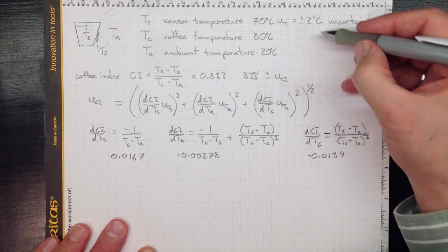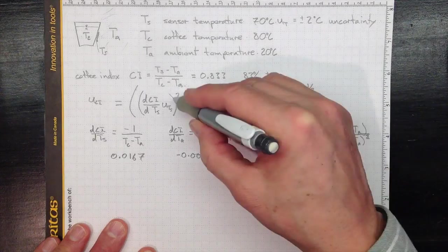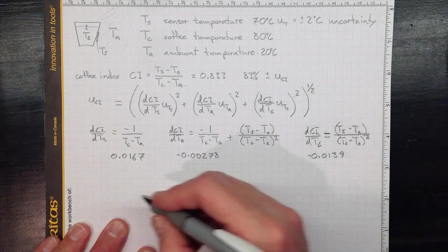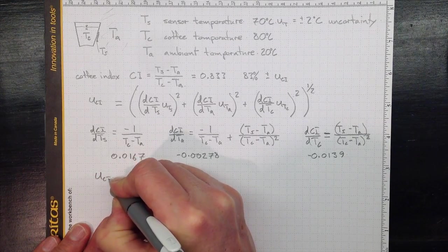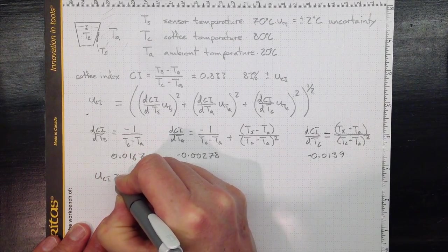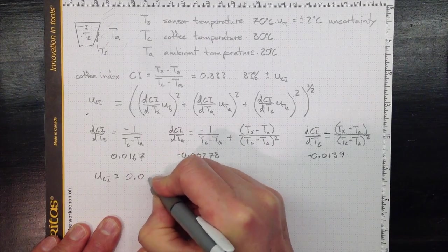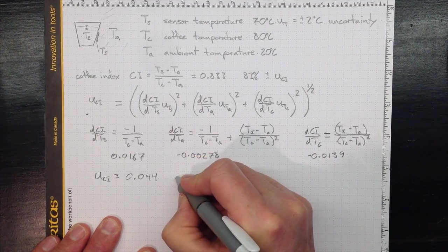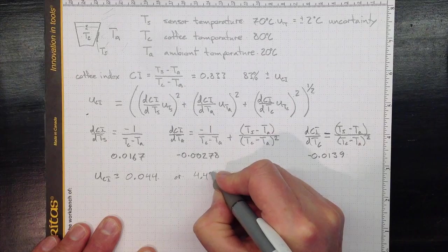I would get negative 0.0139. Multiply each of those by two, for two degrees Celsius in here. Square them, add them up, and take the square root. And I wind up with an uncertainty in CI equal to 0.044, or 4.4%.